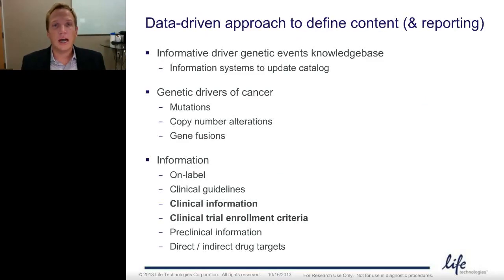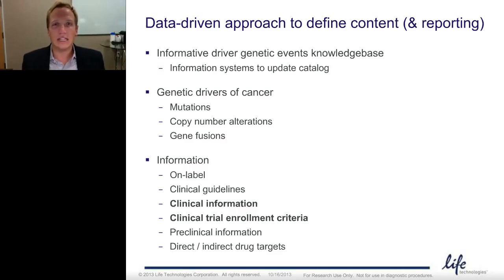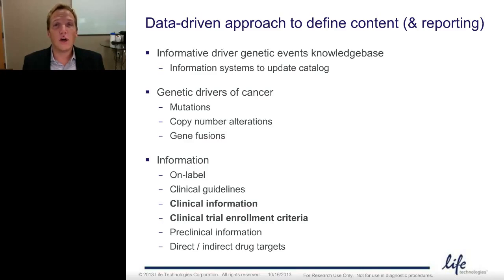Now we've covered mutations, copy number alterations, and gene fusions — building really the first half of the informative driver genetic events knowledge base. Now let's talk about the information sources to bring to bear to understand which of these driver genetic events are informative from a treatments and trials perspective. When we talk about on-label, we go to the FDA website and simply read what are all of the genetic events that show up on drug labels — those important enough to have landed on a drug label. Similarly, with clinical guidelines, we've surveyed the NCCN and ASCO clinical guidelines and identified all cases where one of our genetic drivers shows up and documented all of those.